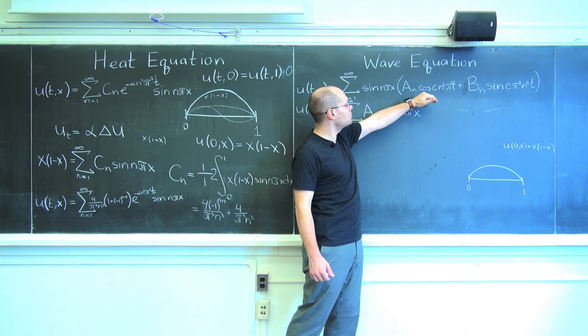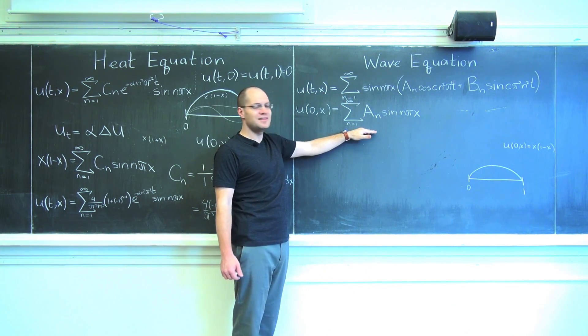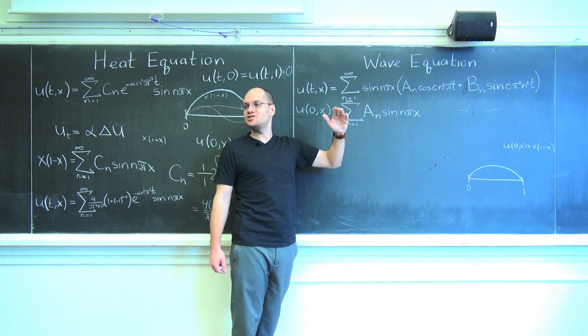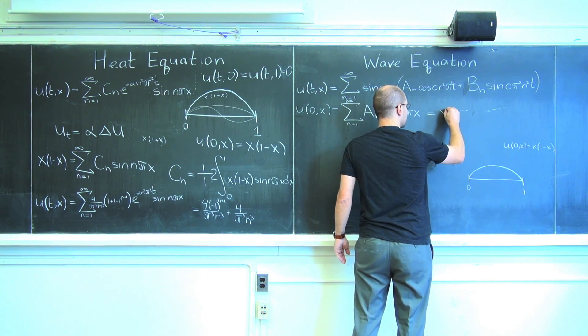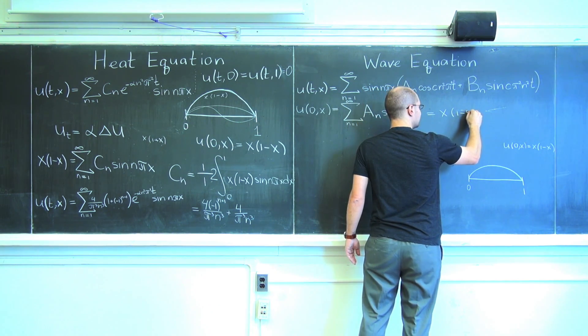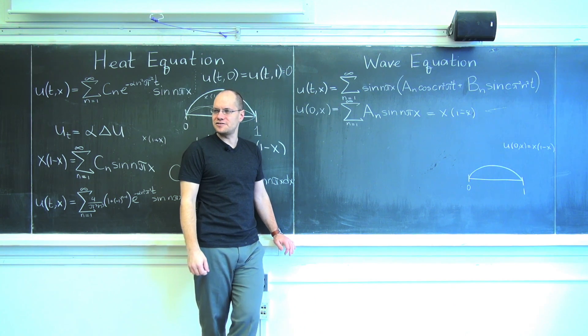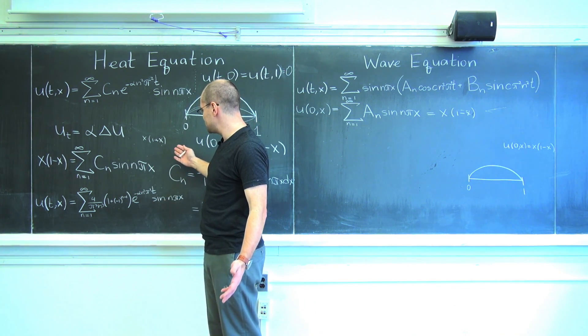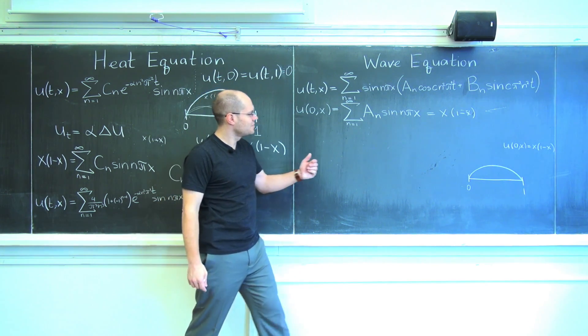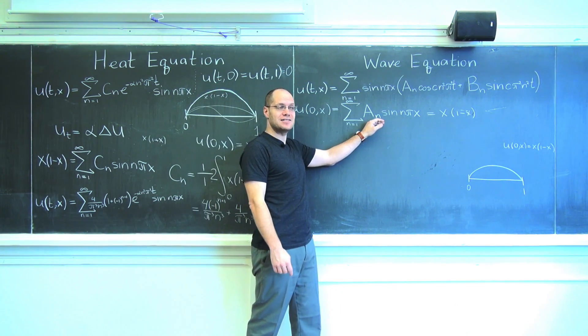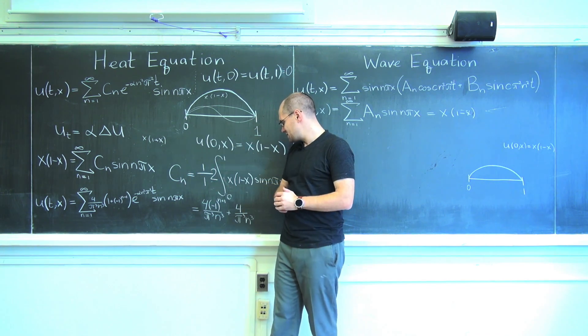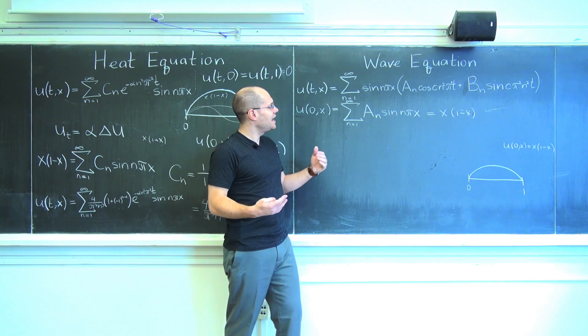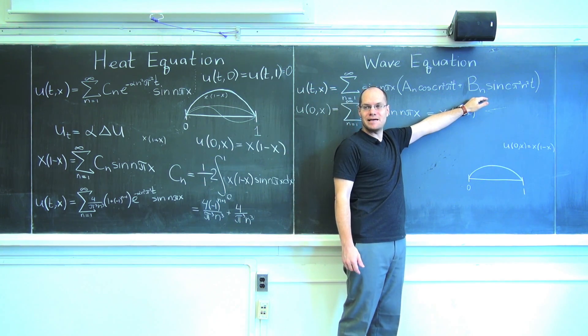So at time t equals zero, we're just left with this, essentially, Fourier series that should match the initial condition equals x times 1 minus x. And just like here, actually, I believe the problem is identical. It is, of course. We will get the same coefficients for a sub n's that we've got here for c sub n's.